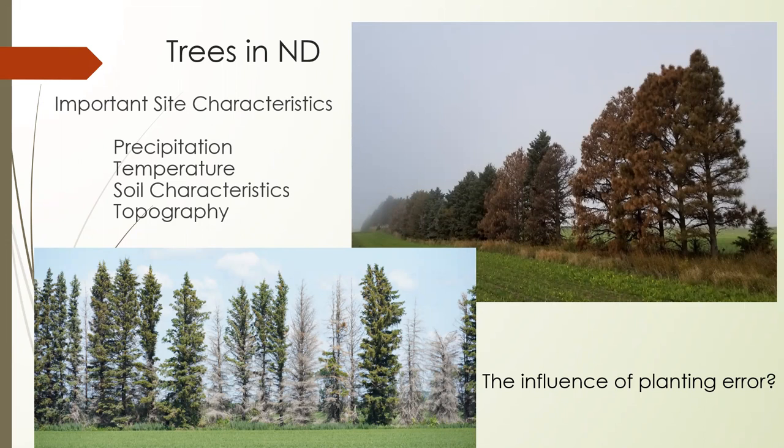Why can conditions in North Dakota be challenging for trees? Lack of rain — so moisture — is a major factor. But sometimes it's not just not enough; sometimes it's too much or precipitation coming at the wrong time — all at once and then nothing. On the west side of the state you can get down to maybe 10 inches of precipitation. On the east side there's like 20 to 22 inches.